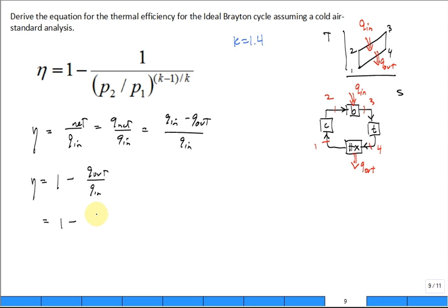This is one minus—what is Q out in terms of? Is that H four minus H one? And Q in is H three minus H two?